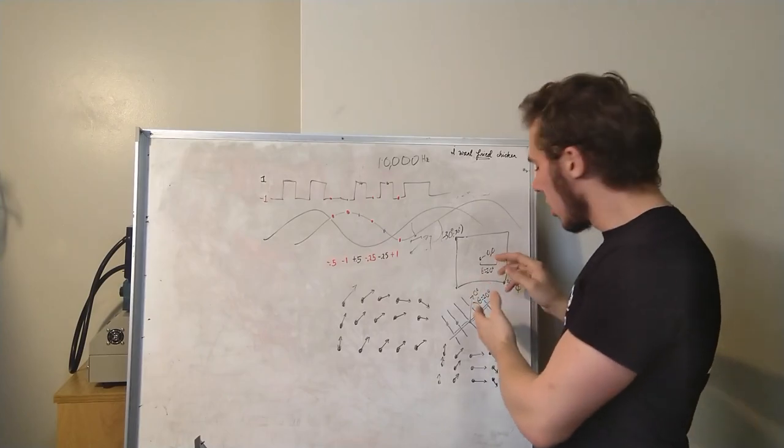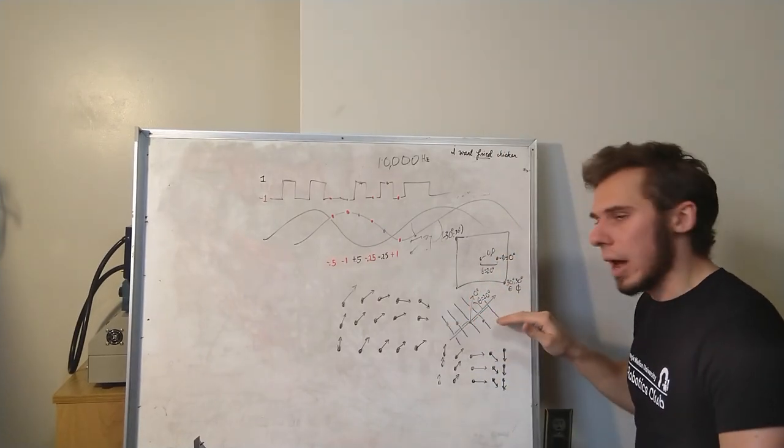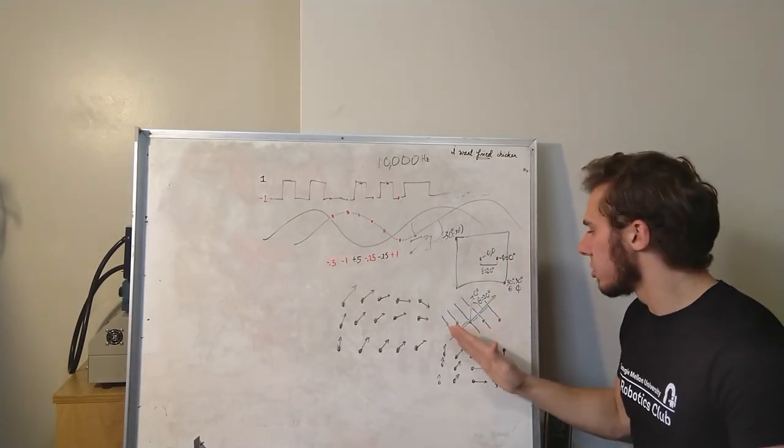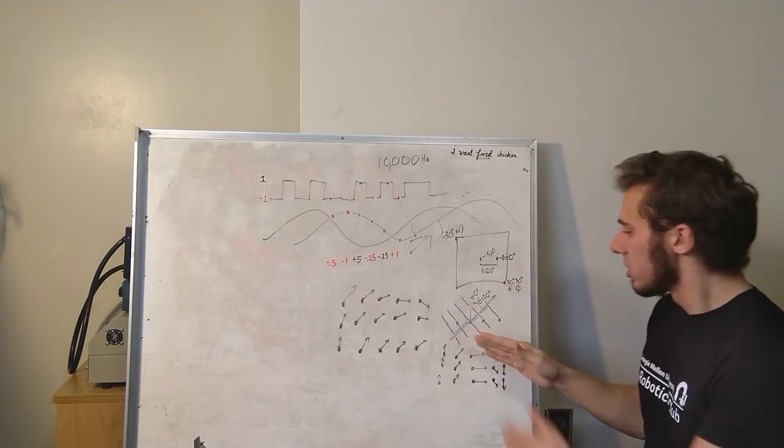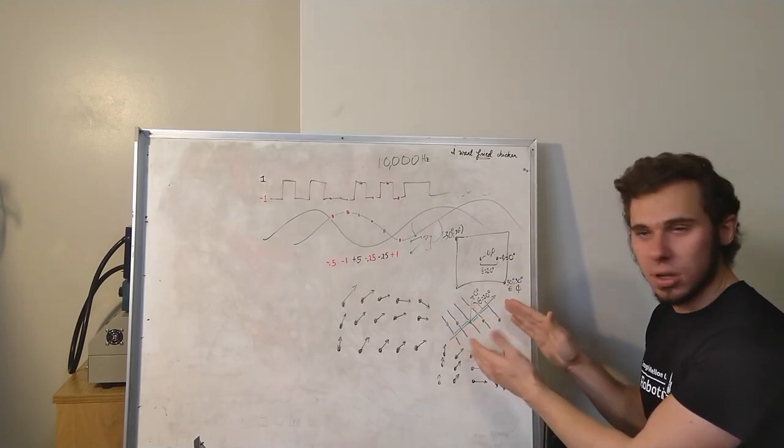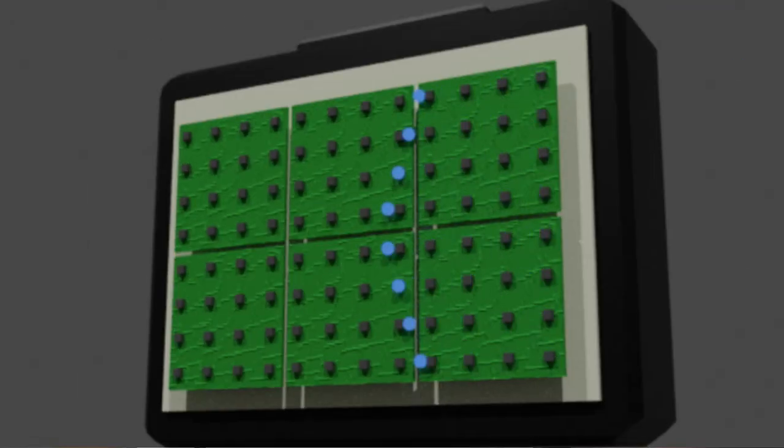So once we've got these two angles, we go and compute, based on our array geometry, how we expect the signal to move across the array. So in this case, the blue is the wavefront, like we showed earlier, how it propagates across the array.